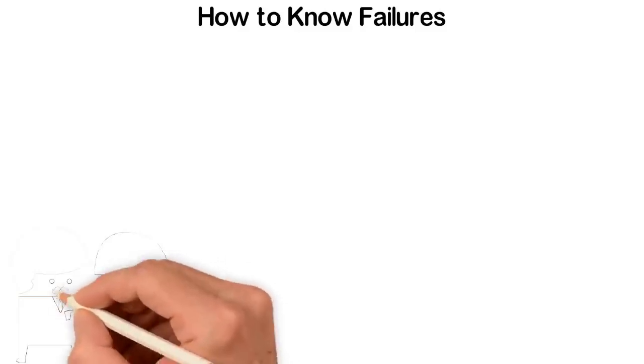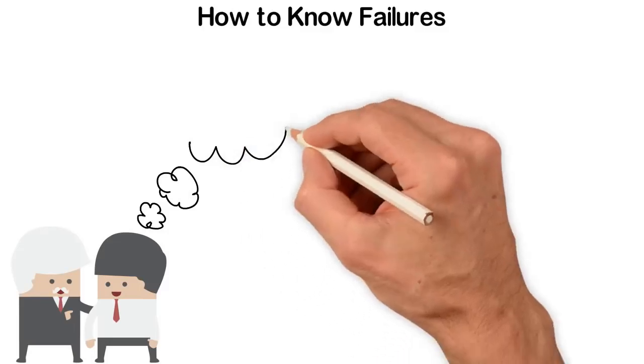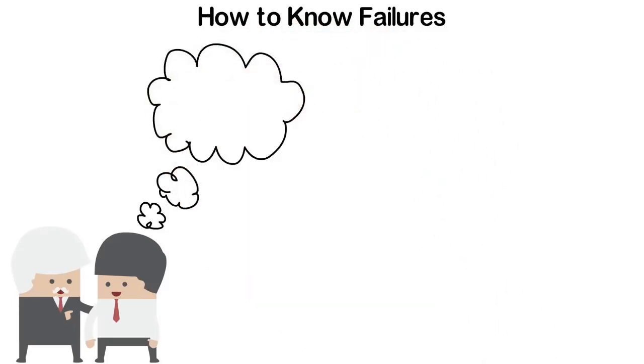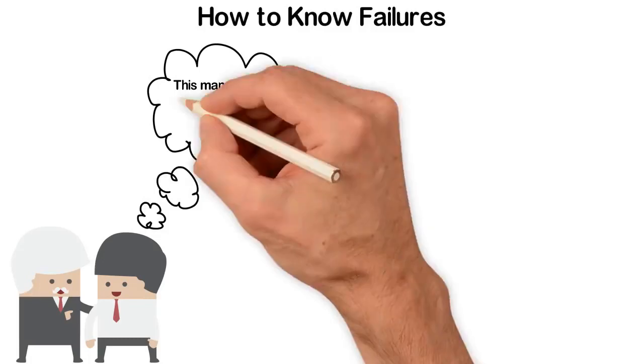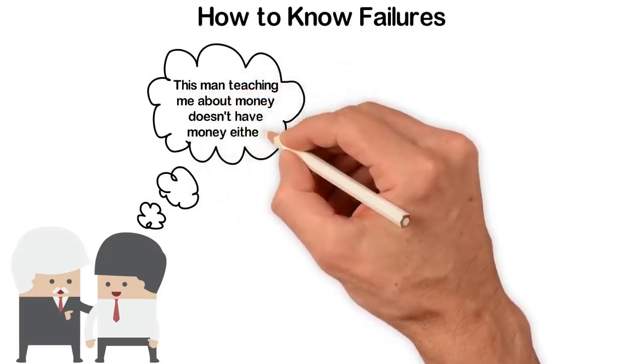Usually for those guys who are already old. If, for example, a 65-year-old poor uncle is advising you about money, it's obvious that he's broke and believe me, people who are broke at such age aren't qualified to teach anyone about money.